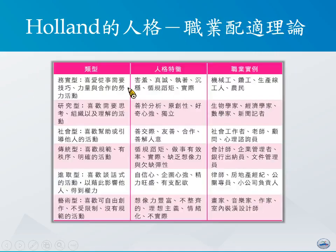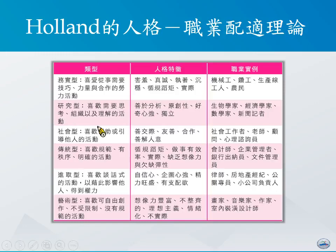他把人格分成了以下六种不大一样的类别。首先第一种就是务实型，务实型的人较为喜欢从事需要技巧、力量跟合作的劳力性活动，人格特质通常包括害羞、真诚、执着、沉稳、循规蹈矩，以及实际等等。常见的职业例子包括机械工、钻工、生产线上的工人，以及农民这类的人。